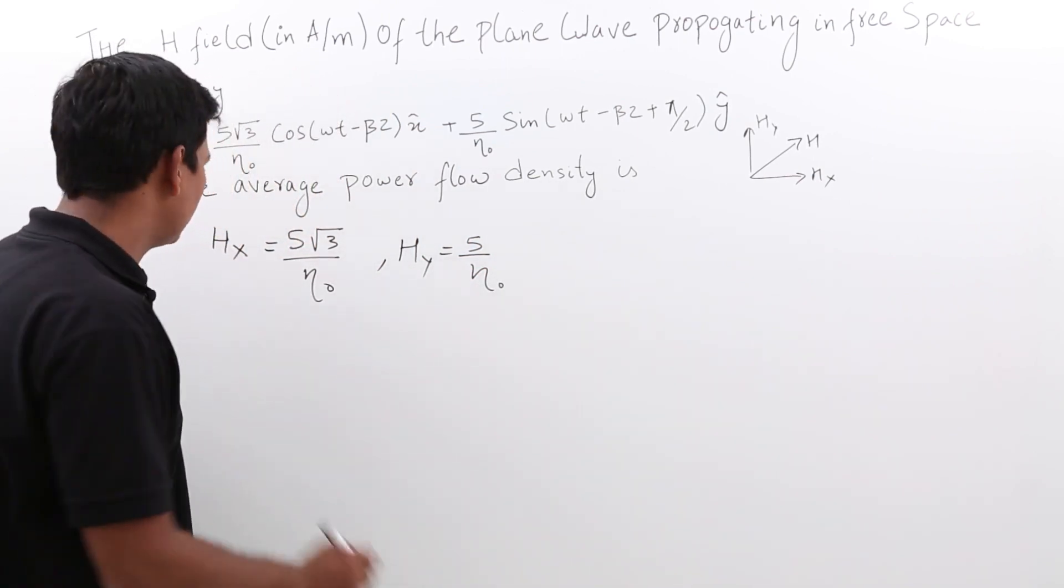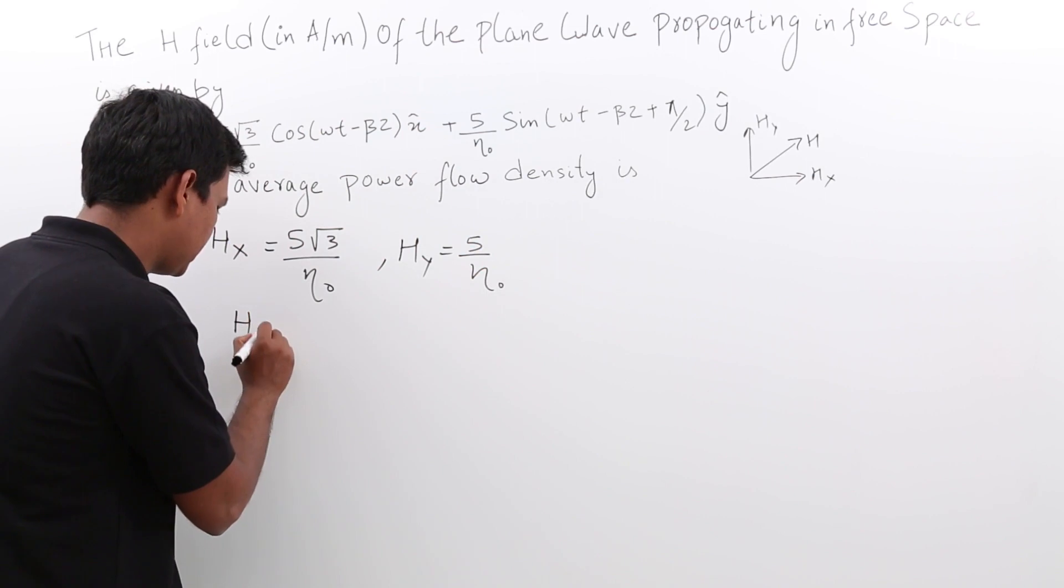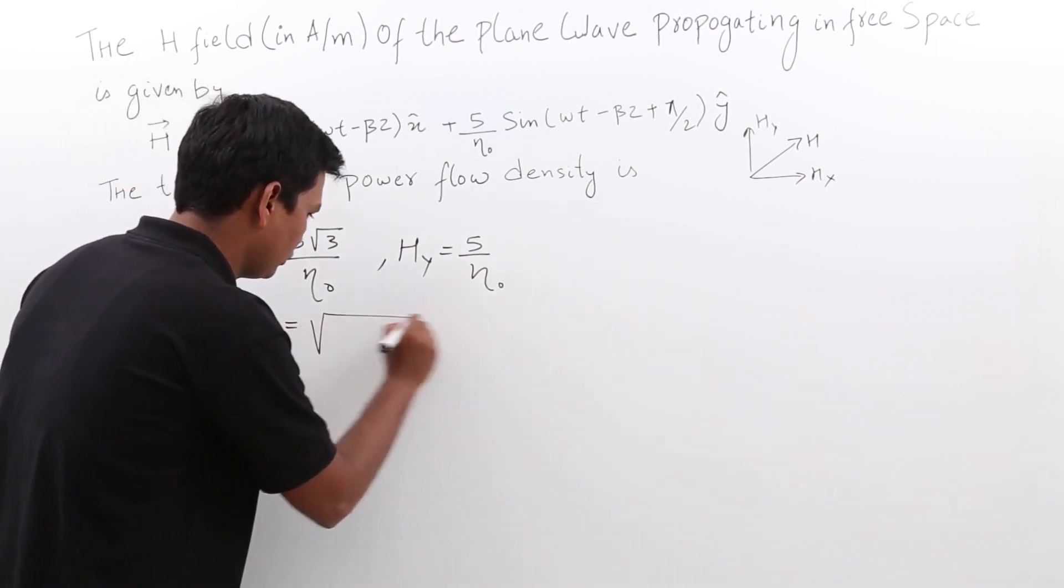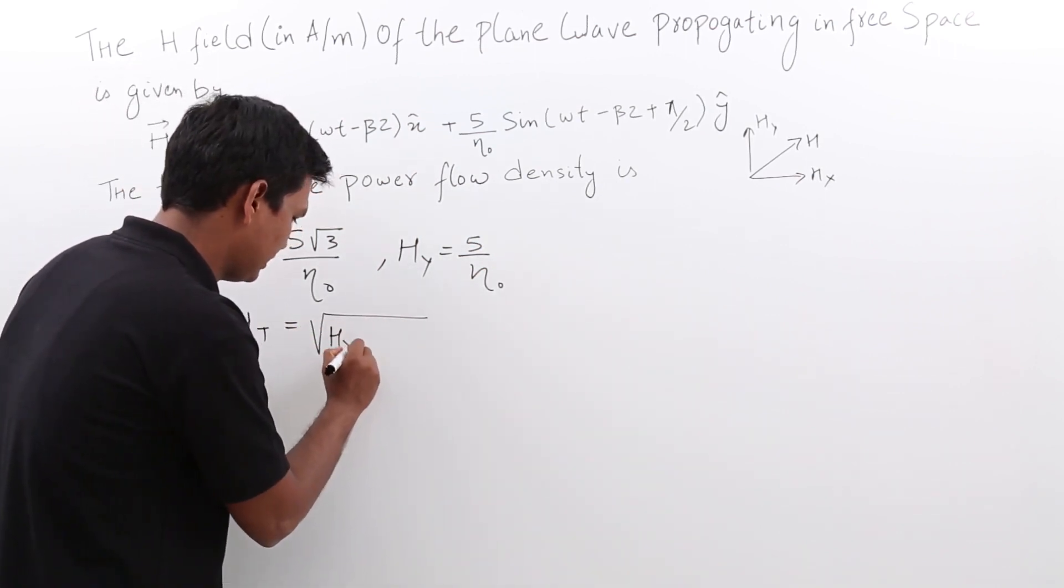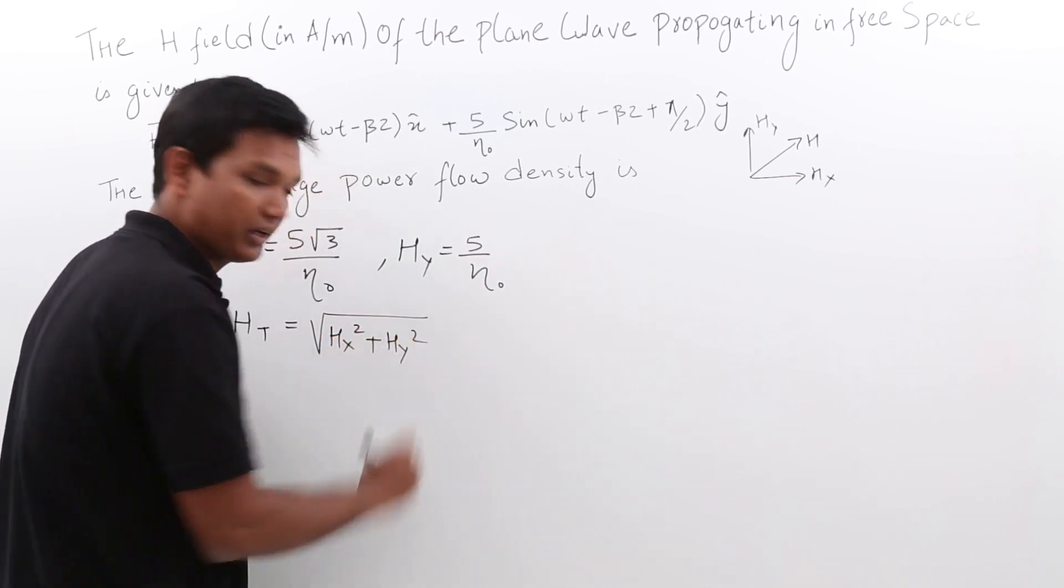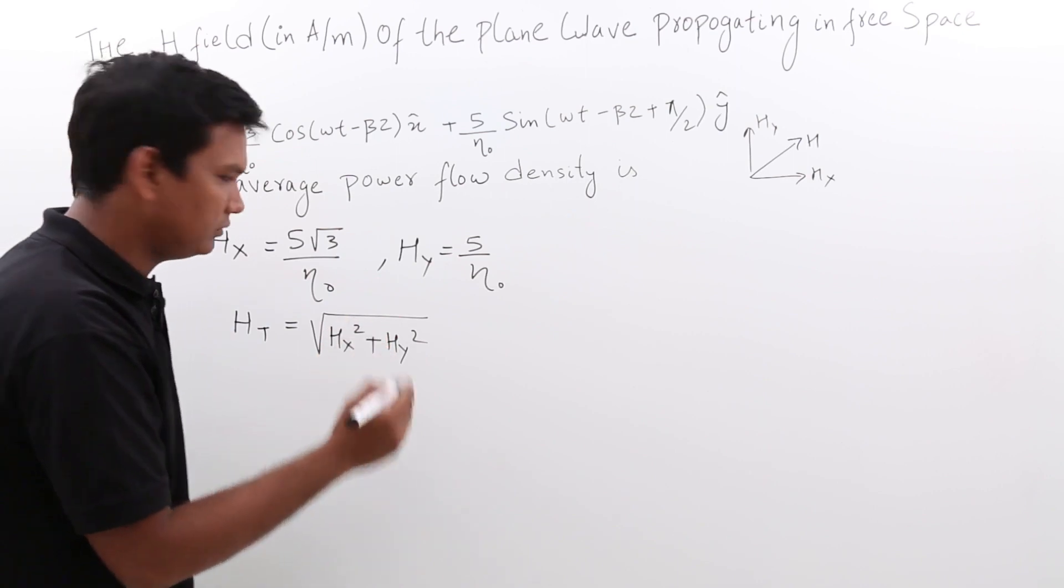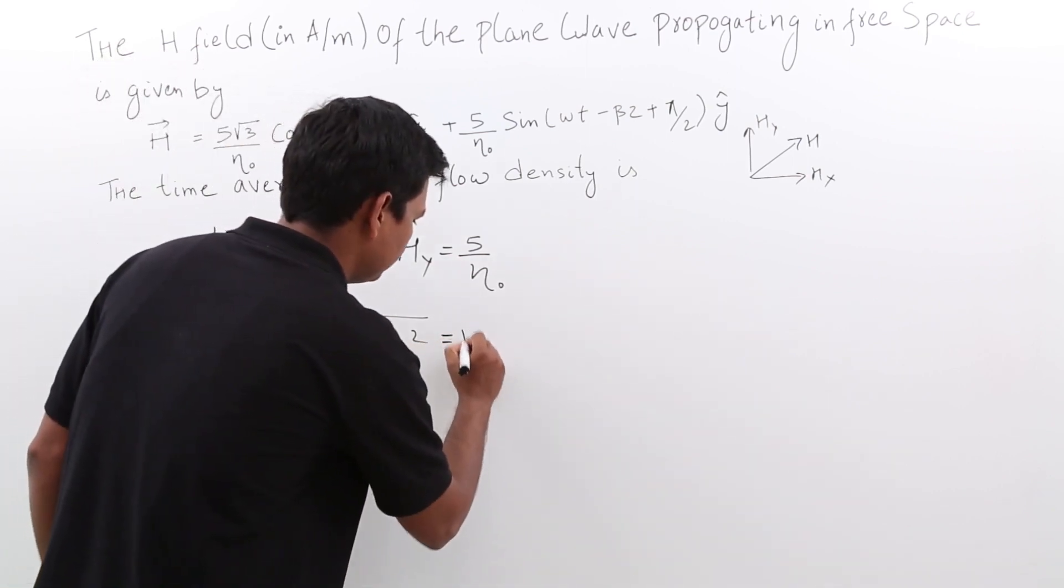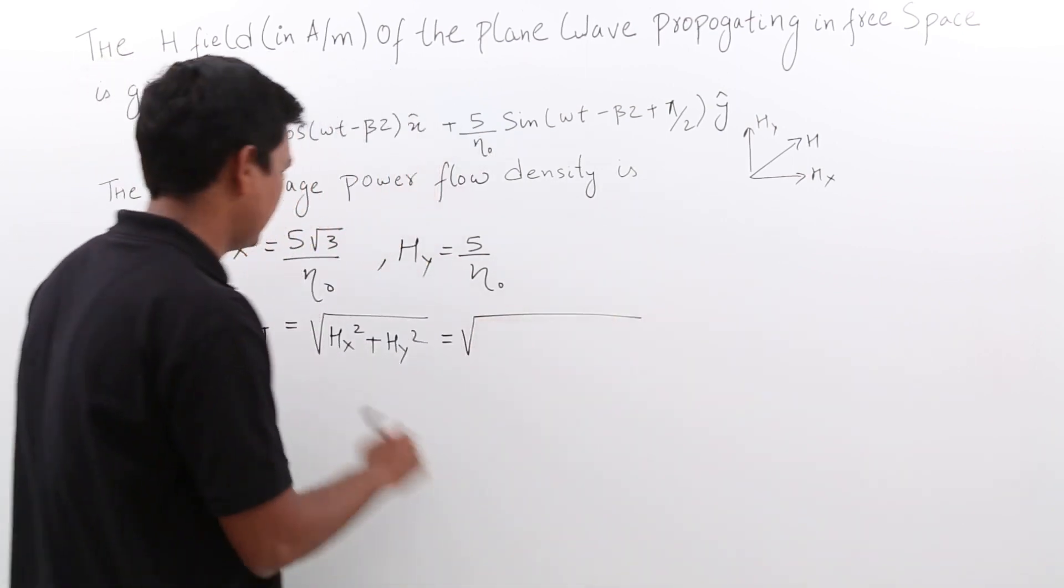So what will be the resultant component? Let me call it the H t component, which would be given by root of H x square plus H y square. Let us substitute that value. If I substitute that value, it would be H x is this.